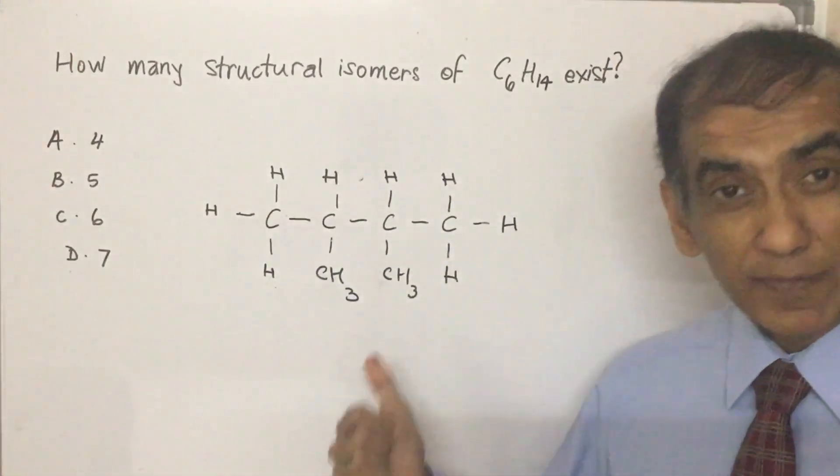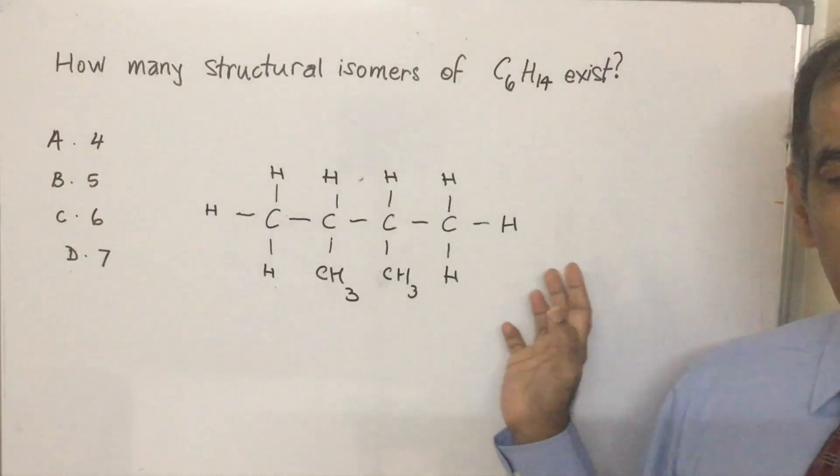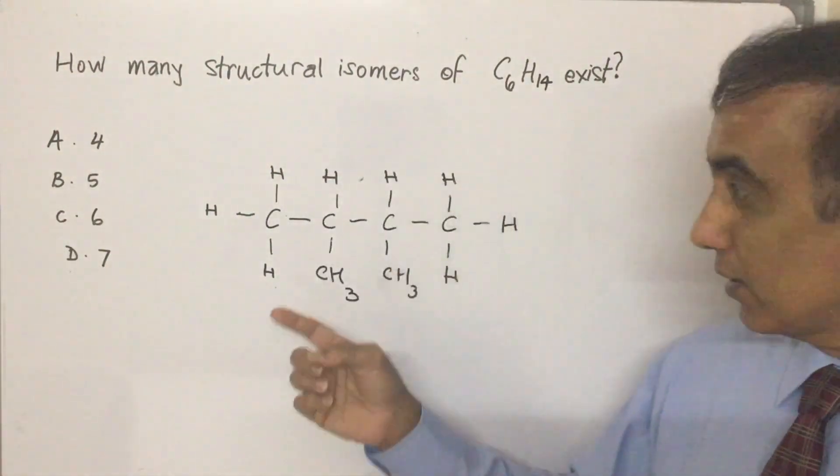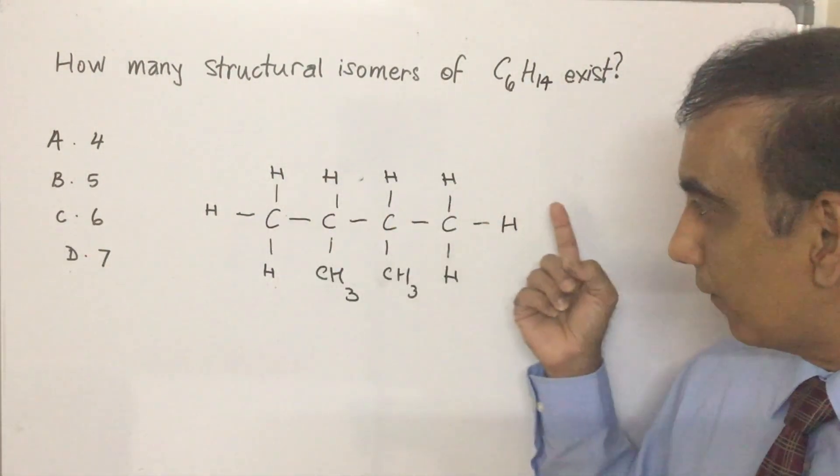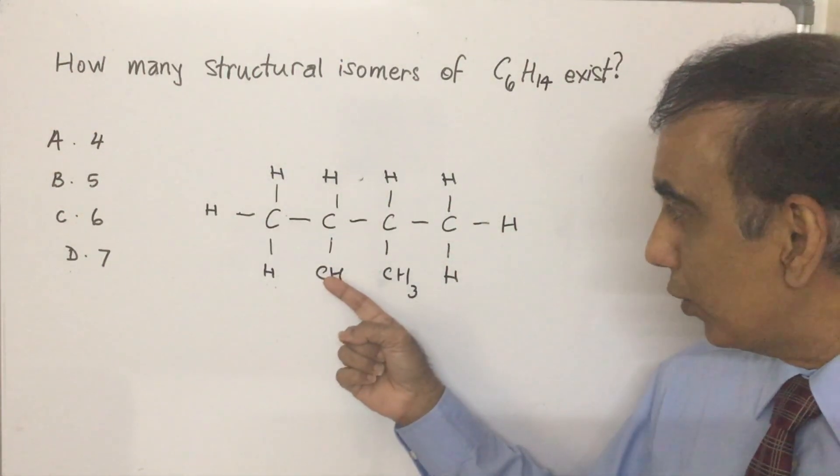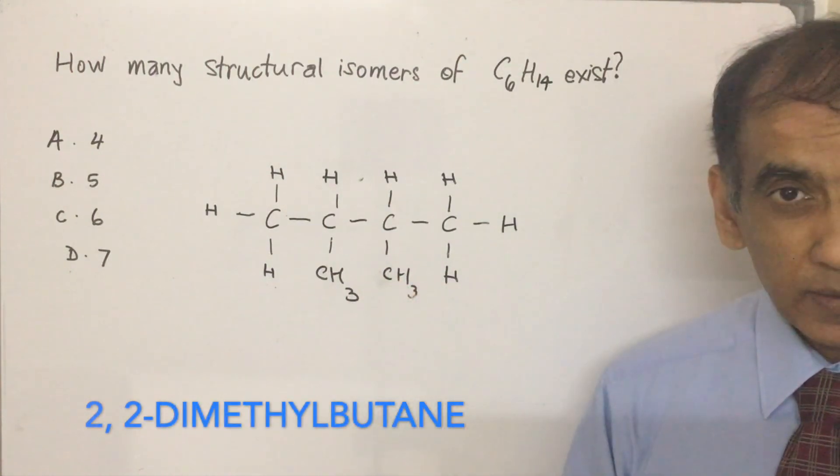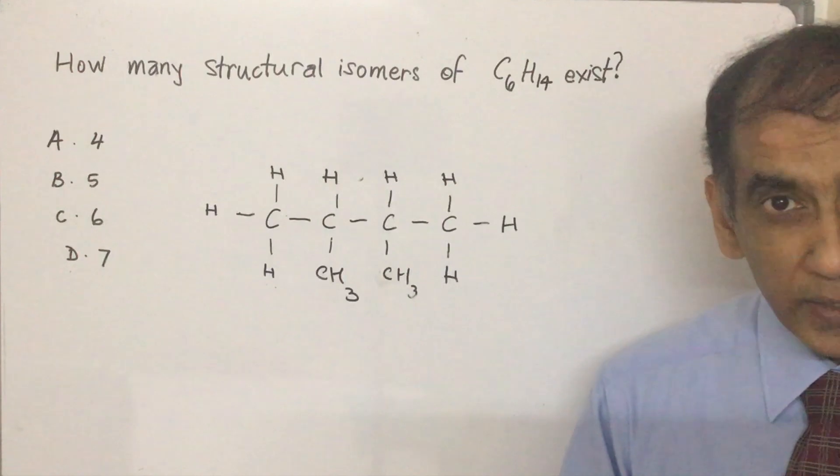And here is the fifth and final structure that you can get. Again, removing two CH3s from C6 to get a continuous chain of four carbons. The name of this isomer would be 1, 2, 2, 3-dimethylbutane. And you've got your five isomers.